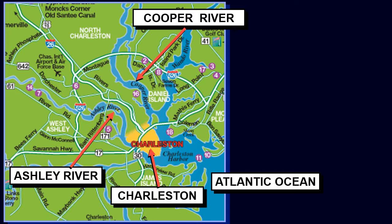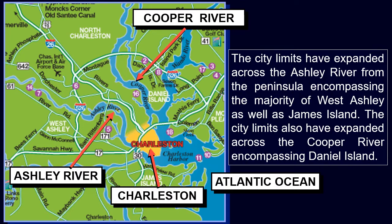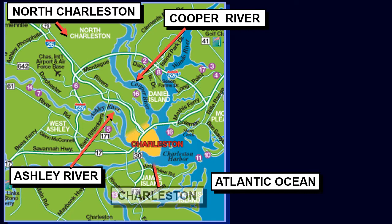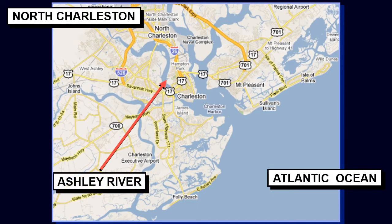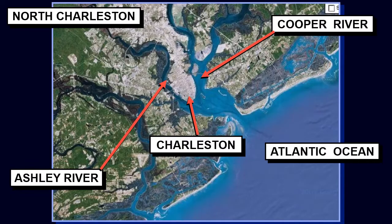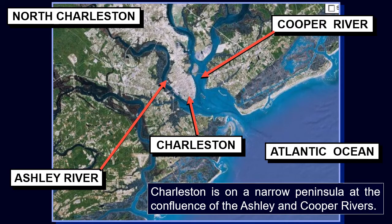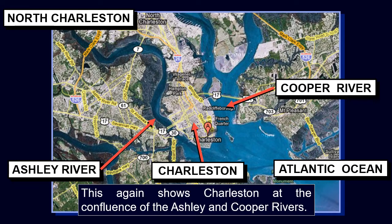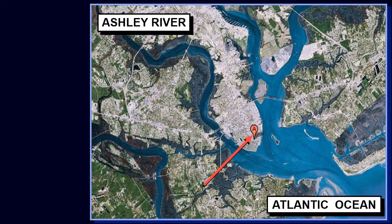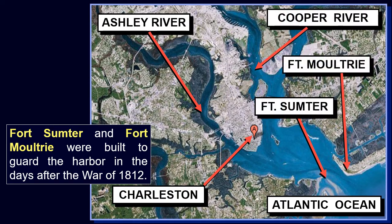The city limits have expanded across the Ashley River from the peninsula, encompassing the majority of West Ashley, as well as James Island. The city limits also have expanded across the Cooper River, encompassing Daniel Island. North Charleston blocks any expansion up the peninsula and has a population roughly the same as Charleston. Mount Pleasant occupies the land directly east of the Cooper River. Charleston has a large and well-protected harbor.